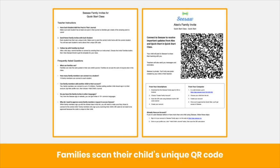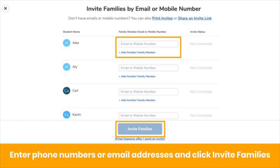Print these PDFs and send them home with students. Family members simply scan the QR code to connect to their child's journal. If you need invites in more than one language, repeat the process for each language you need — you will get a class set for each language you choose. You can also invite families digitally: type in a family member's phone number or email address and click Invite Families. It's that easy.